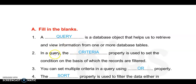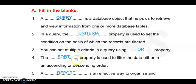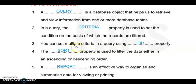Number one: A blank is a database object that helps us to identify, review information from one or more database tables. It is Query. Now number two: In a query, the blank property is used to set the condition on the basis of which the records are filtered. It is Criteria property. Number three: You can set multiple criteria in query using blank property. It is OR property.